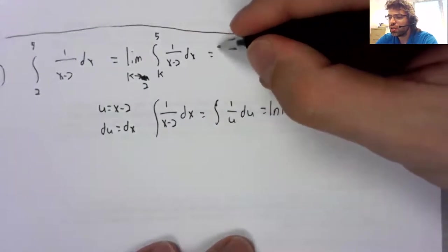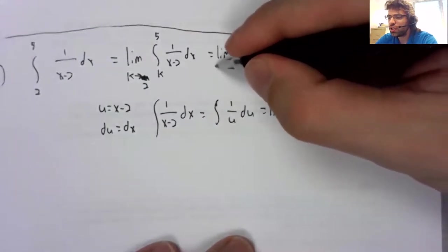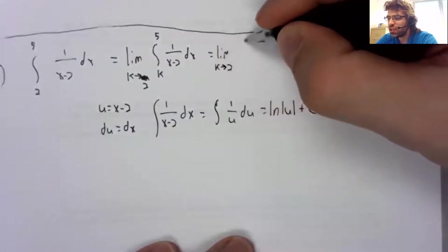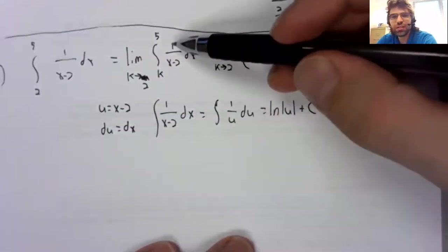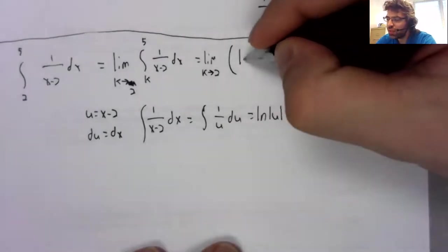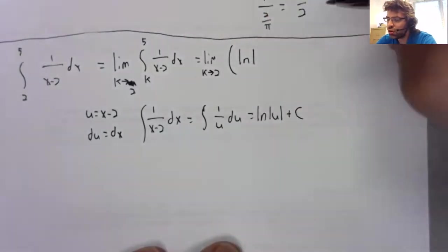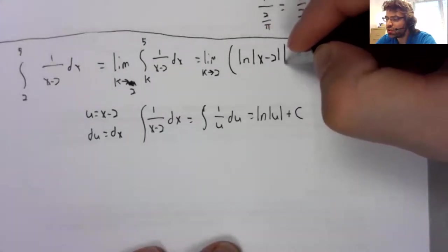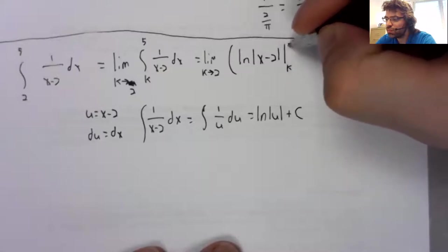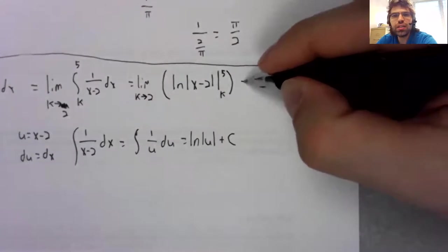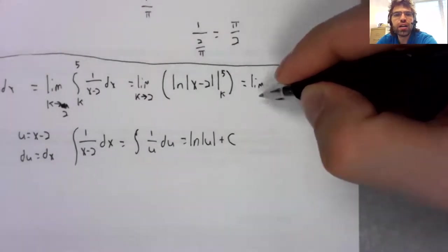And then we already did the work. The next thing we need to do is take this antiderivative, which we did. The natural log of the absolute value of x minus two evaluated from k to five.